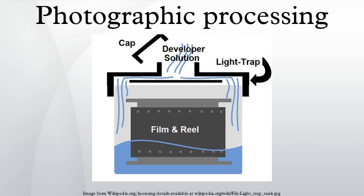Photographic processing is the chemical means by which photographic film and paper is treated after photographic exposure to produce a negative or positive image. Photographic processing transforms the latent image into a visible image, makes this permanent and renders it insensitive to light.